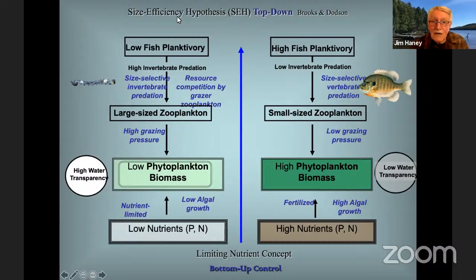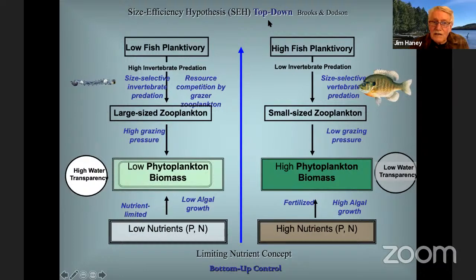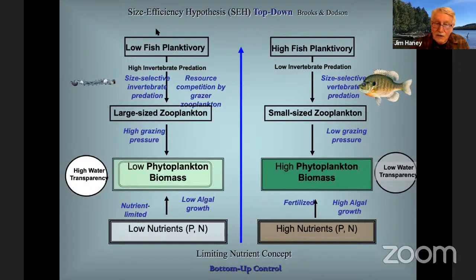There's a paper by Brooks and Dodson called the size-efficiency hypothesis, which predicts exactly this effect of fish upon phytoplankton. It's really important because it says lakes can be controlled not just by nutrients — we all know phosphorus is bad for lakes — but you also have to manage the fish, otherwise you'll shift the size composition of the zooplankton.